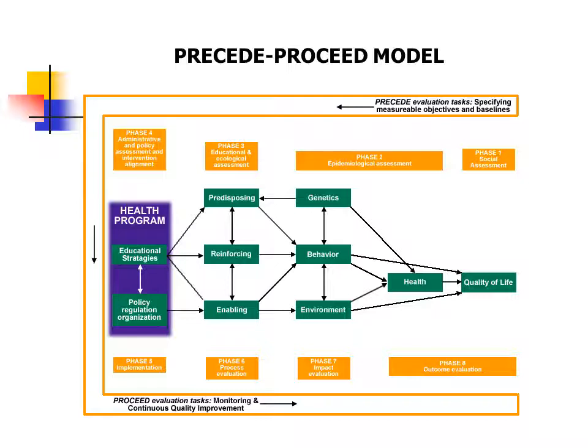Phase two is the epidemiological assessment, where we look at secondary data to determine the health status of people in the community — what's the incidence of diabetes, cardiovascular disease, obesity, cancer, and so on. Then in phase three, we look at the causes and categorize them. You saw some of these words in the PRECEDE acronym: predisposing factors, reinforcing factors, and enabling factors. We identify those causes of the problem and then develop our interventions to address them.